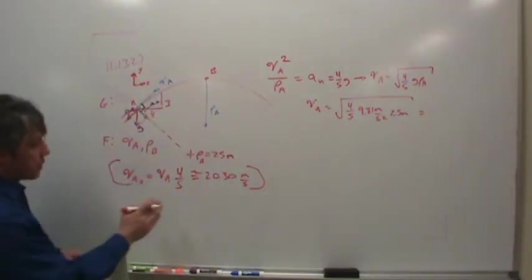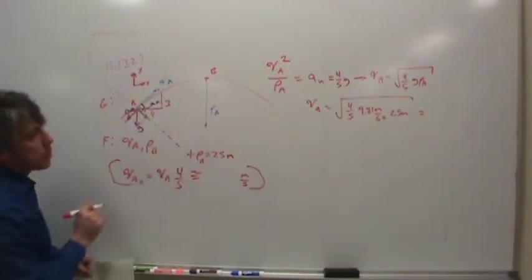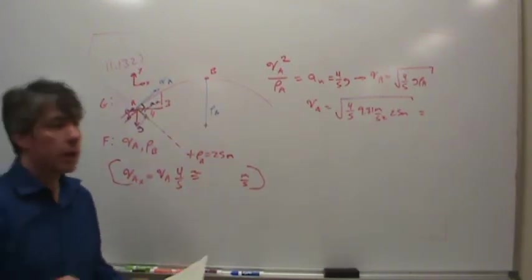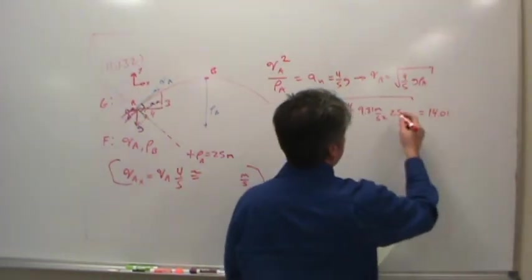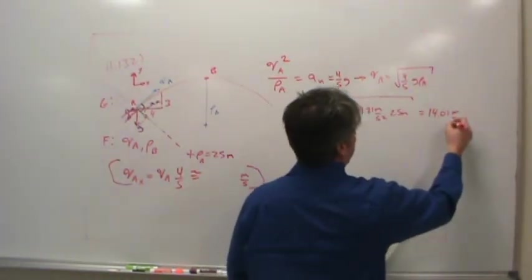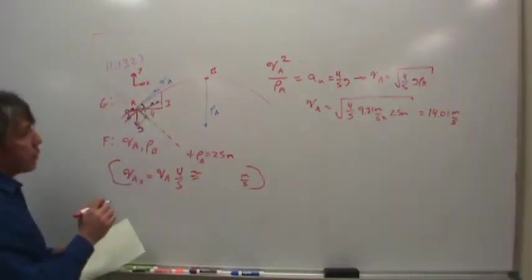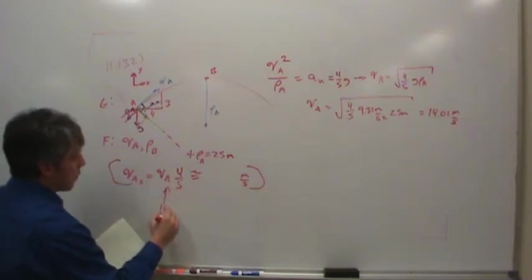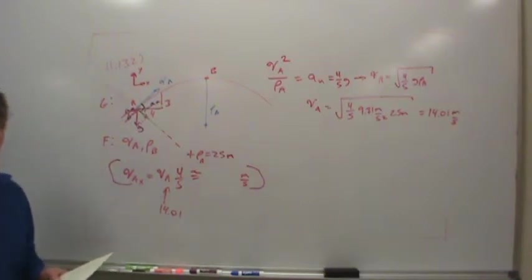And then that means that this number is going to be wrong because it involves VA, which depends on g. We've got a 14.01. 14.01. And the units would be meters per second. Okay. Anyone second that? Okay, good. So let's take 14.01 meters per second.